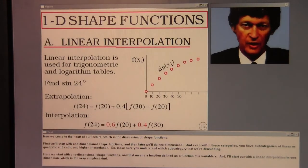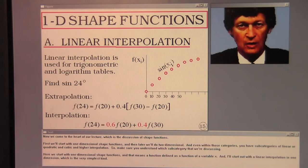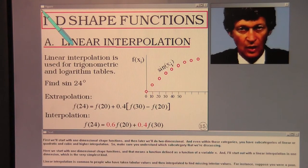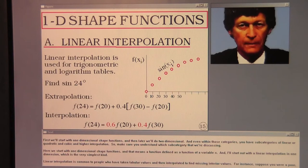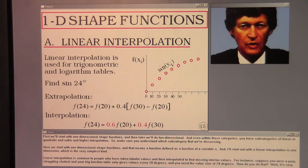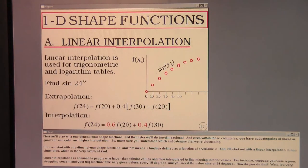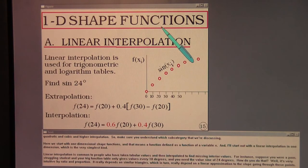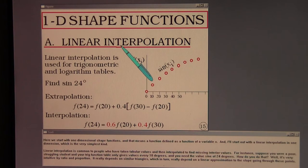Now we come to the heart of the lecture: shape functions. We'll start with one-dimensional shape functions and then move to two-dimensional. Within those categories there are subcategories of linear, quadratic, cubic, and higher interpolation — make sure you understand which subcategory we're discussing. We start with one-dimensional shape functions, meaning a function defined as a function of variable x, beginning with the simplest kind: linear interpolation.